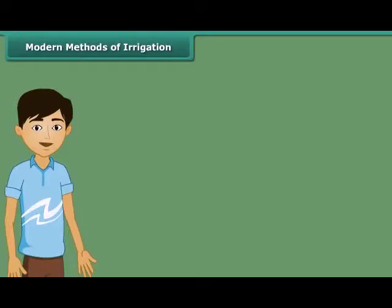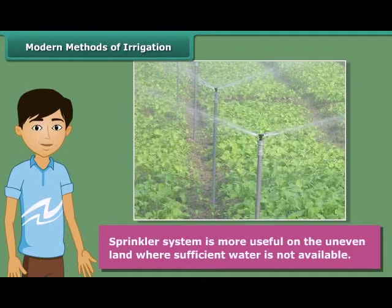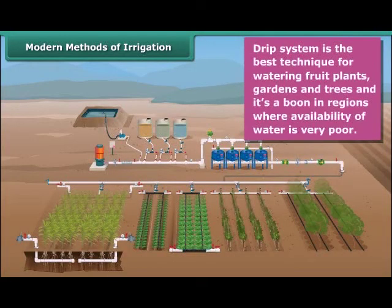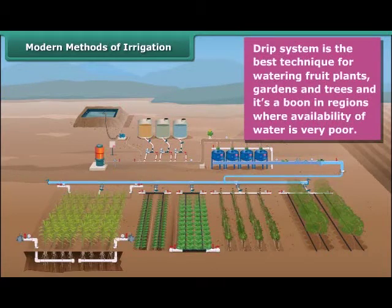Let us now know about modern methods of irrigation. The sprinkler system is most useful on uneven land where sufficient water is not available. Perpendicular pipes with rotating nozzles on top are joined to the main pipeline at regular intervals. When water flows through the main pipe under pressure, it escapes from the rotating nozzles and gets sprinkled on the crop as if it is raining. In the drip system, water falls drop by drop just at the position of the roots — it is the best technique for watering fruit plants, gardens, and trees, and water is not wasted at all.